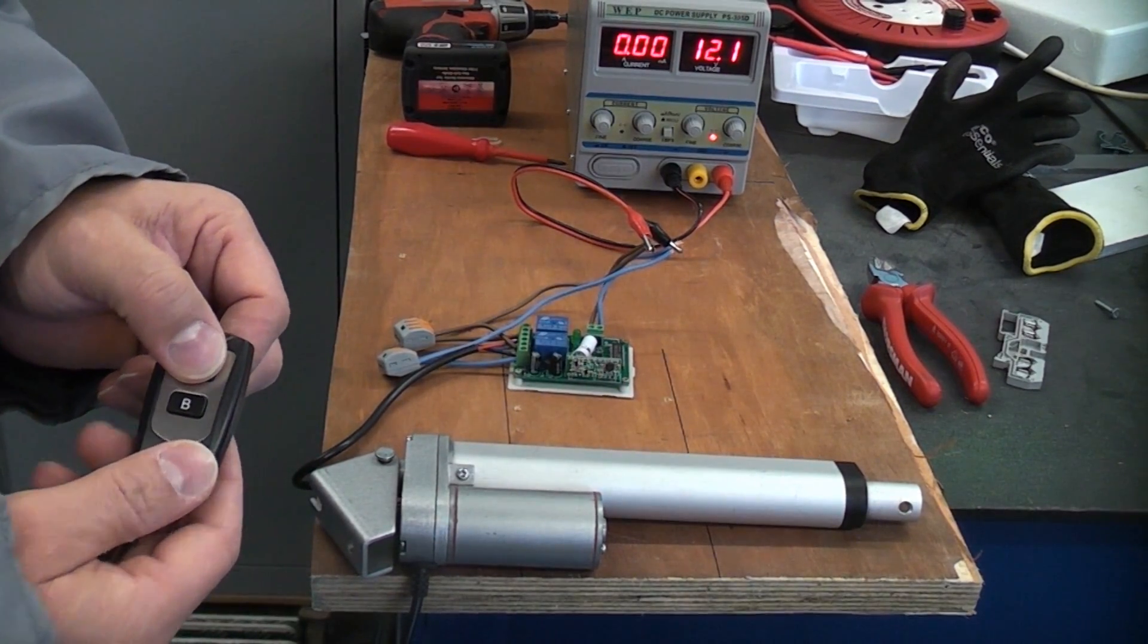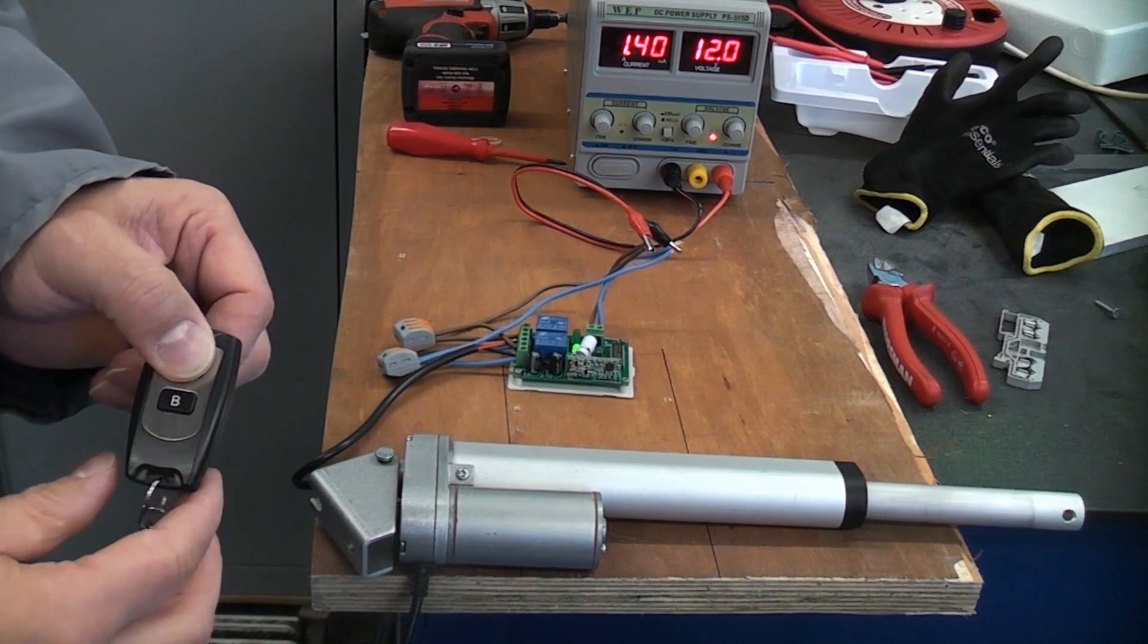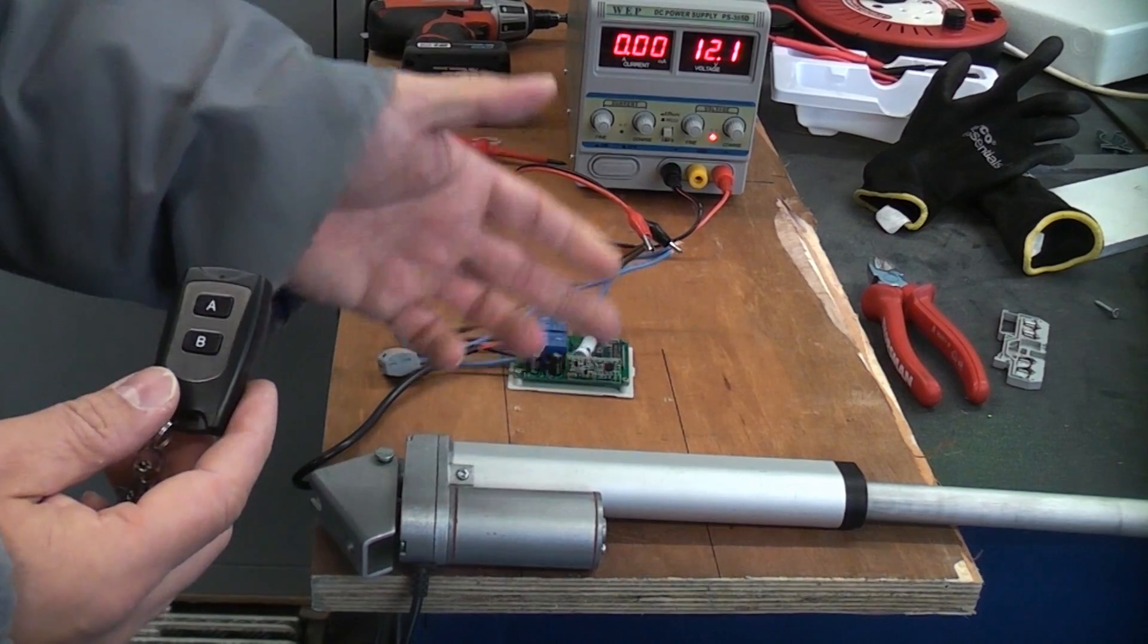So if we now press the A button, you'll see the green light come on on the circuit board and the linear actuator will extend until it reaches its limit.